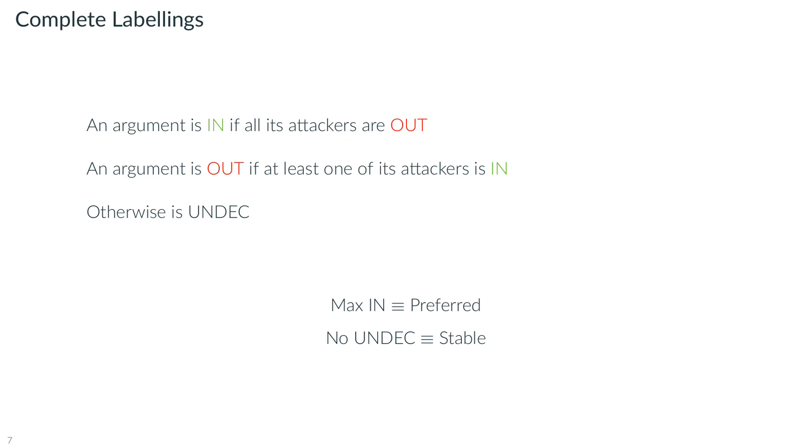When it comes time to resolve some of the argumentation problems, a useful concept comes to hand, the one of complete labelling. A labelling is a function mapping each argument into one of the three following labels: in, out, or undecided.